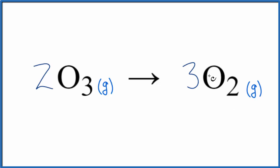So now this equation is balanced. We have six oxygen atoms on each side. This is useful because it tells us the ratio: two ozone molecules will break apart and form three oxygen molecules. Both O3 and O2, they are gases...